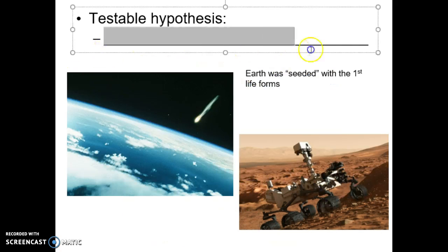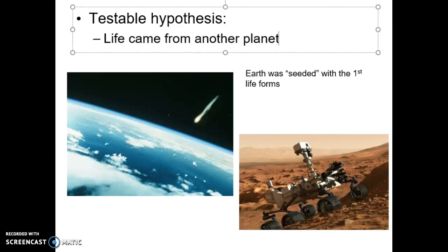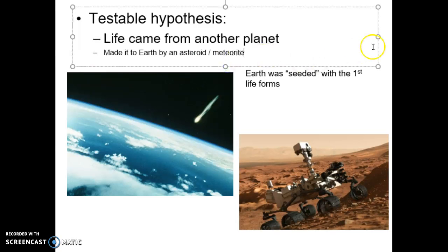One hypothesis is that life came from another planet. The Earth was seeded with the first life forms. So the thought, what is being tested and studied right now, is that did life emerge or life made it to Earth by an asteroid? Some kind of meteorite, some projectile from another planet came to Earth, hits Earth, and it carries with it this earliest life form. So the Earth is thought to have been seeded with the earliest life forms that way.